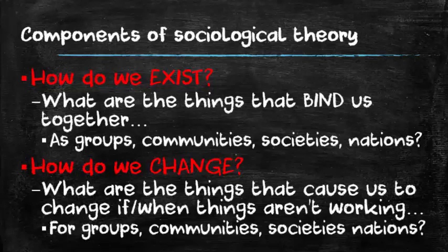All sociological theories have to address two key questions. The first is: how do we exist? What is it that binds us together — what are the components like the glue that keeps us together as groups, communities, societies, nations? The second key question is: how do we change? If things aren't working well, if we start to find some ripples in the fabric of society, what is the mechanism that changes us? Every theory has to address these questions in a different way — otherwise we wouldn't need competing theories.